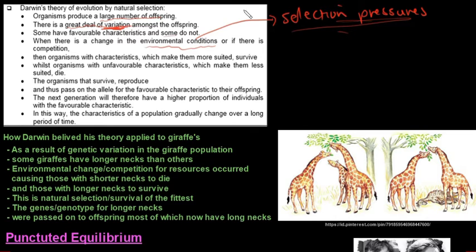So when these environmental pressures or selection pressures arise, the organisms with characteristics which make them more suited, so favorable conditions, they survive. Whilst organisms with unfavorable characteristics which make them less suited will die.